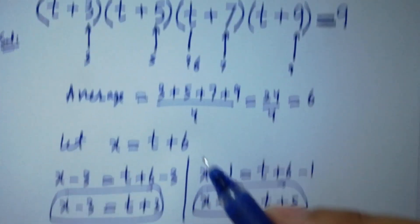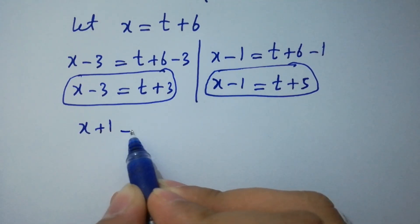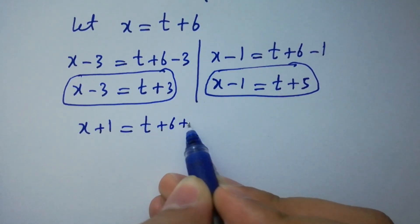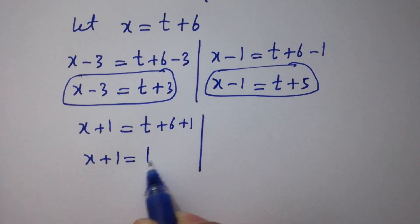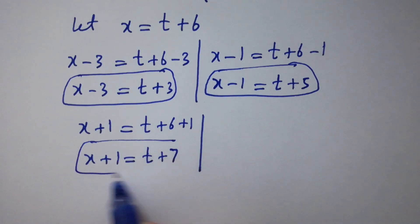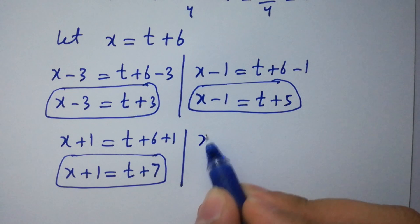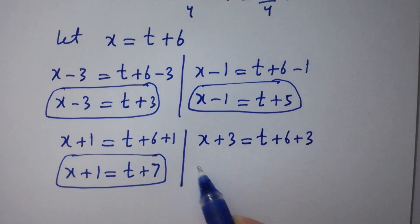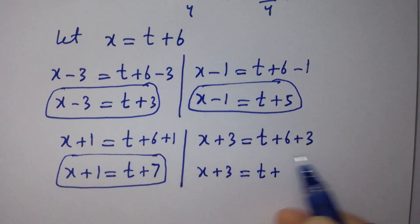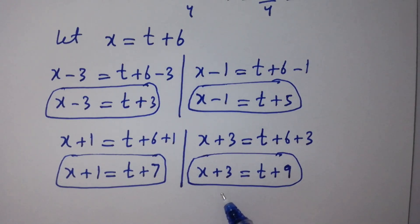Next, for t+7, add 1 on both sides: x+1 = t+6+1 = t+7. So t+7 = x+1. And for t+9, add 3 on both sides: x+3 = t+6+3 = t+9. So t+9 = x+3.